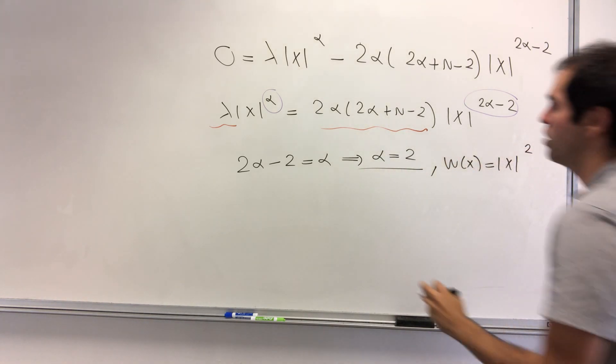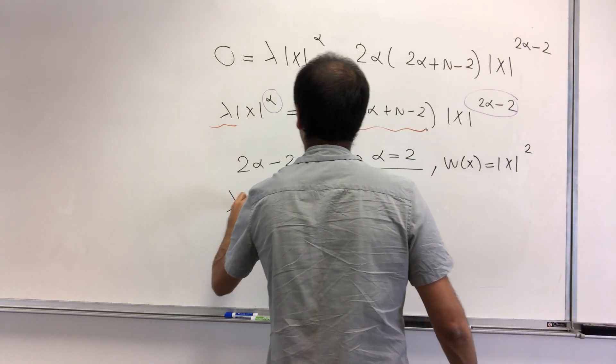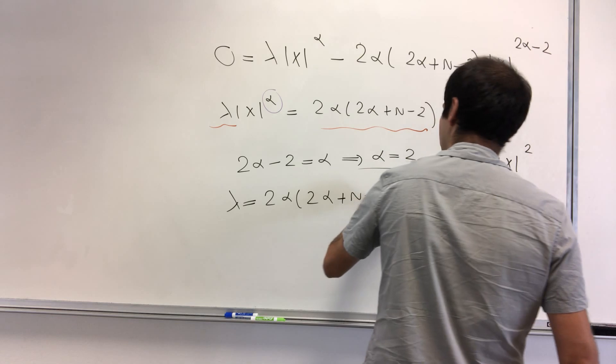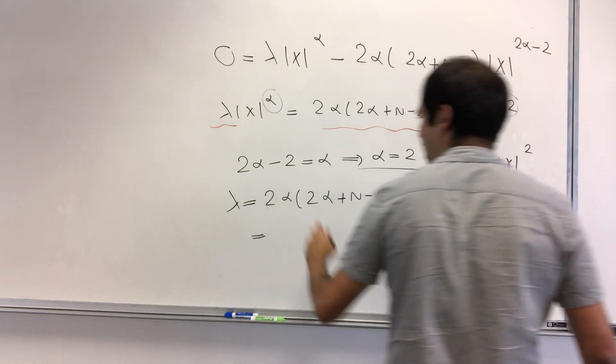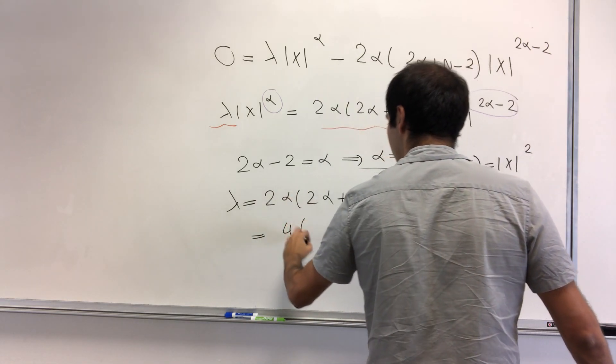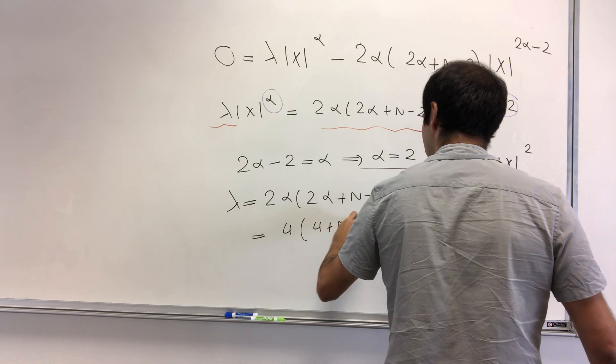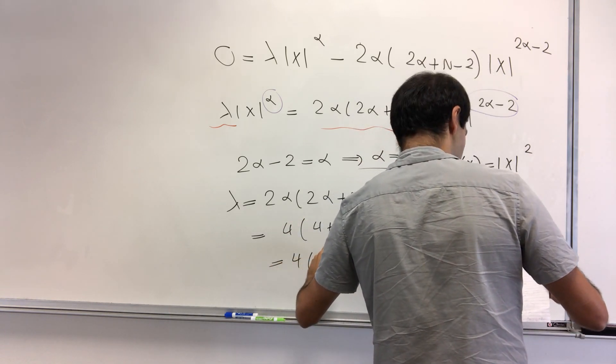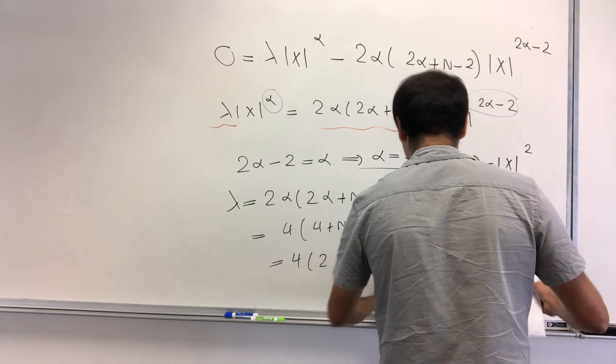And on the other hand, what we get is lambda equals 2 alpha times 2 alpha plus n minus 2. So I believe, again, alpha is 2, so it's 4 times 4 plus n minus 2 and that is 4 times 2 plus n or 4 times n plus 2.